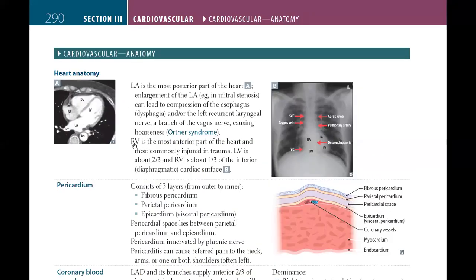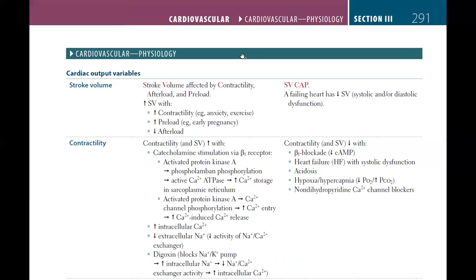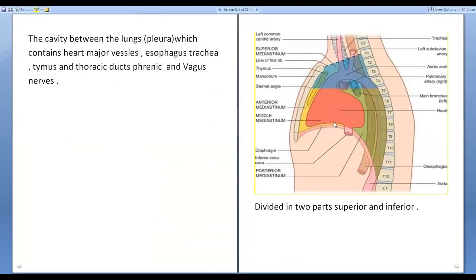Right ventricle is the most anterior part of the heart. We studied anterior part most commonly injured by trauma. Left ventricle is about two-thirds and right ventricle is about one-third. The inferior cardiac surface, this is diaphragmatic surface, it is formed by left ventricle and right ventricle. We already discussed it.